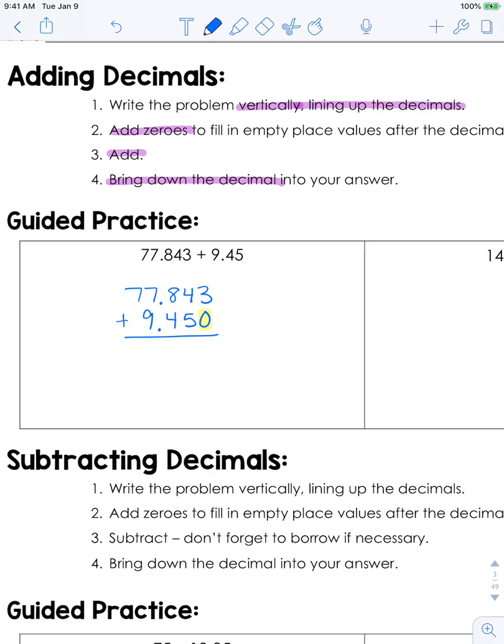Now we'll just add straight down just as you would whole numbers, not forgetting to carry, and then your decimal should just drop straight down. So once you get an answer you should be able to draw a straight line and connect all three decimals, both the two that you're adding and the one that's in your answer.